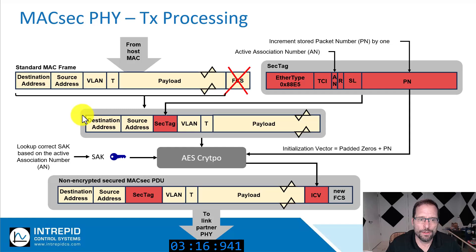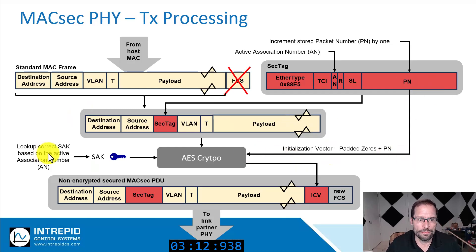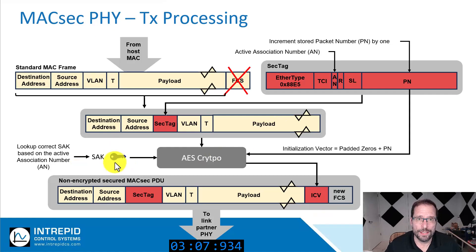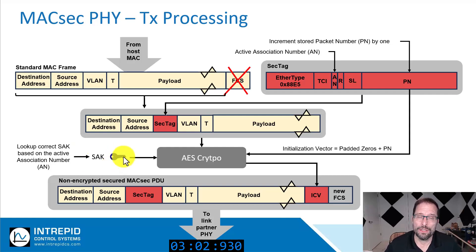MACSEC uses the frame data, an initialization vector, and the ephemeral SAK to generate the ICV value. An ephemeral SAK is used because this hides the identity of the main secret, which is the CAK.